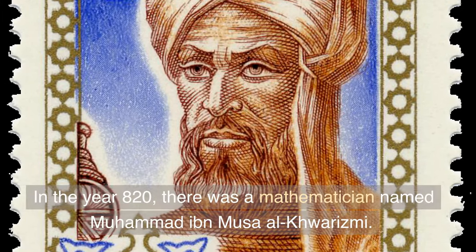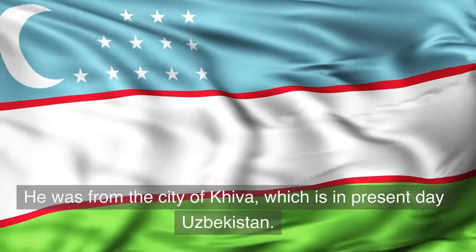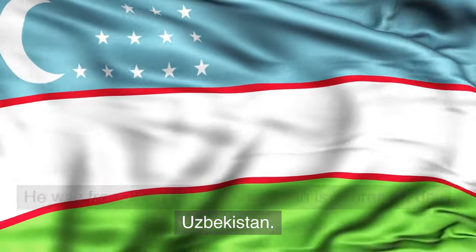In the year 820, there was a mathematician named Muhammad ibn Musa al-Khwarizmi. He was from the city of Kiva, which is in present-day Uzbekistan.